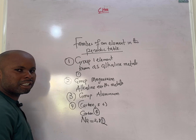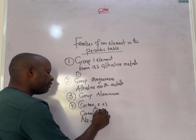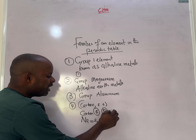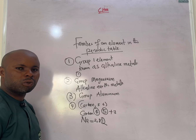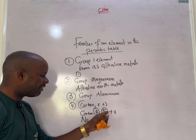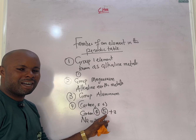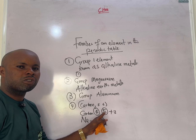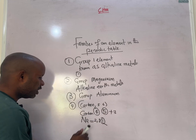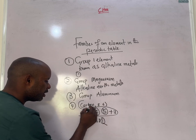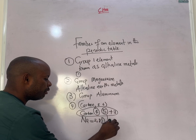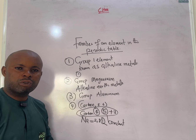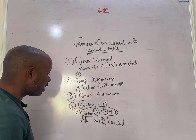When you get to group five, those elements would need only three more electrons to achieve the octet structure, making it very hard for them to release five electrons. Within these groups, elements undergo covalent bonding — instead of transferring electrons they share electrons between the reacting species.